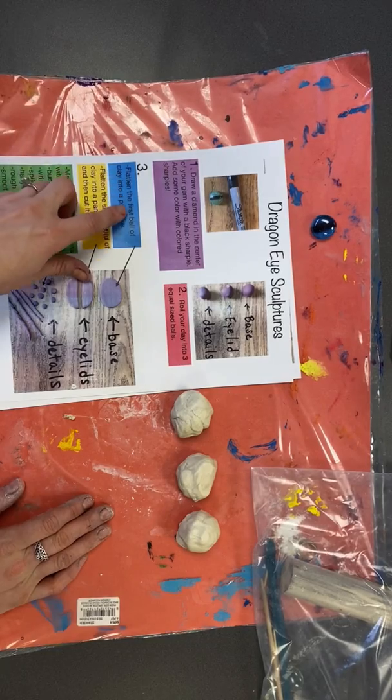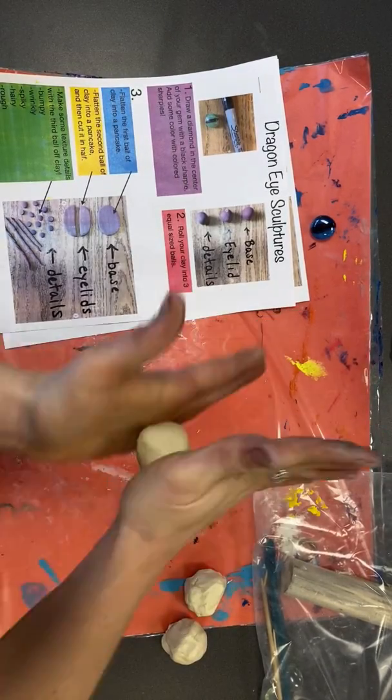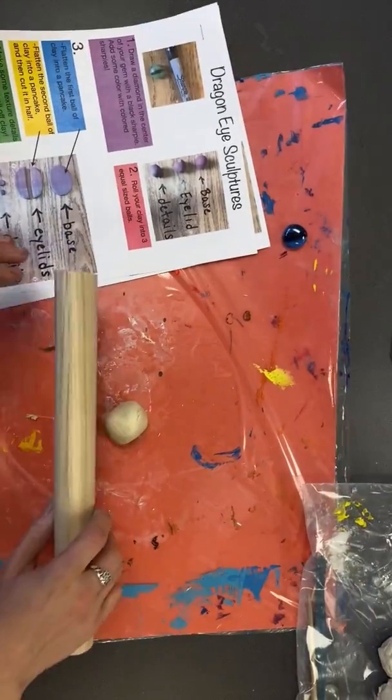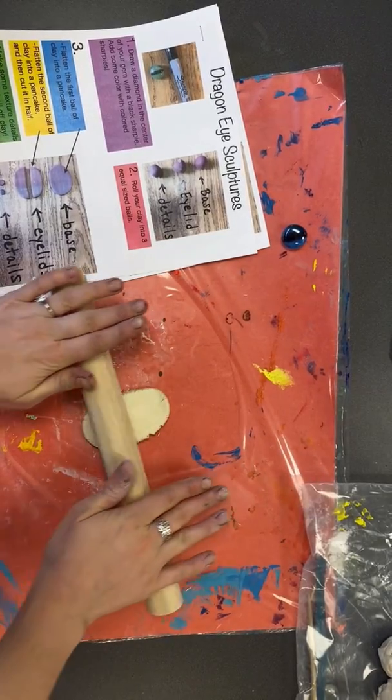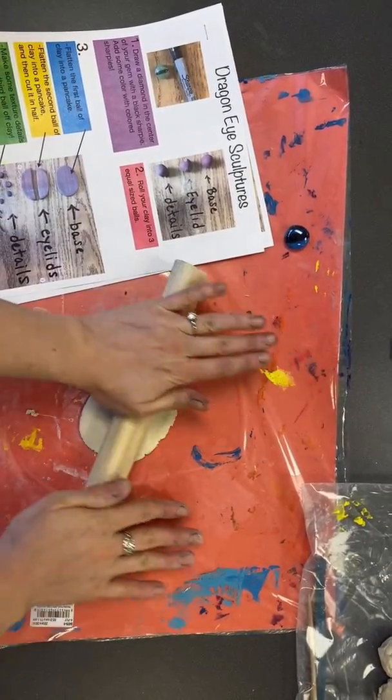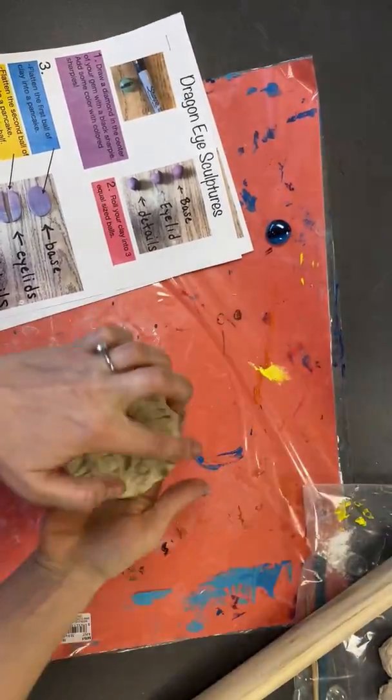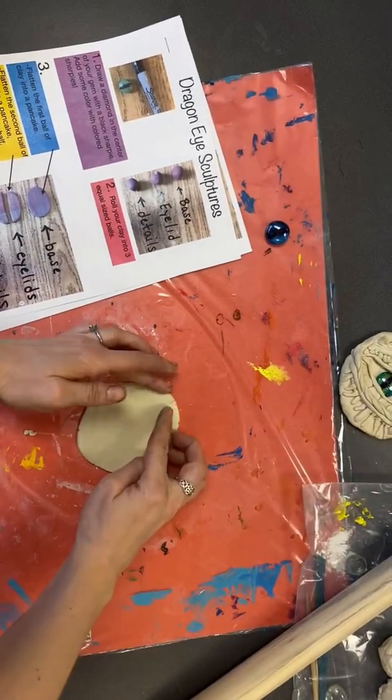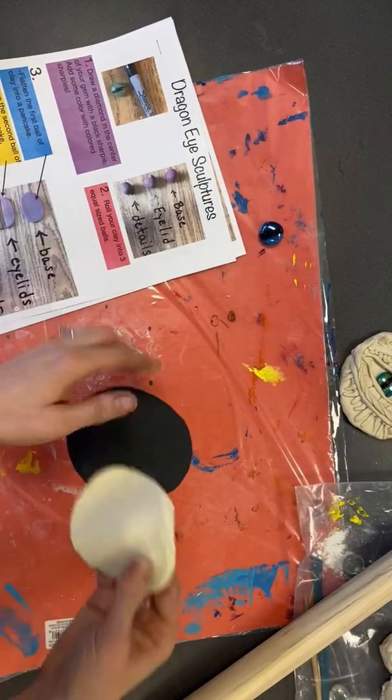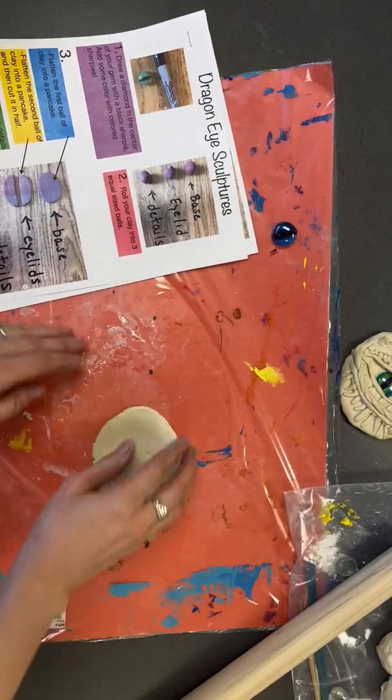So let's start with number three. It says flatten the first ball of clay into a pancake. So using my first ball of clay, I'm going to flatten this into a pancake. So I'm going to start by rolling it first into a ball. Then I'm going to use my roller tool from my bag and I'm just going to press this down, up and down and then left to right a couple times. My goal here is to try and make a circle that looks flat like a pancake because this is going to be the outside of the eye. There's also a black circle tracer in the bag that you have. Your eyes should be about this big, no bigger. So use this as a tracer guide.